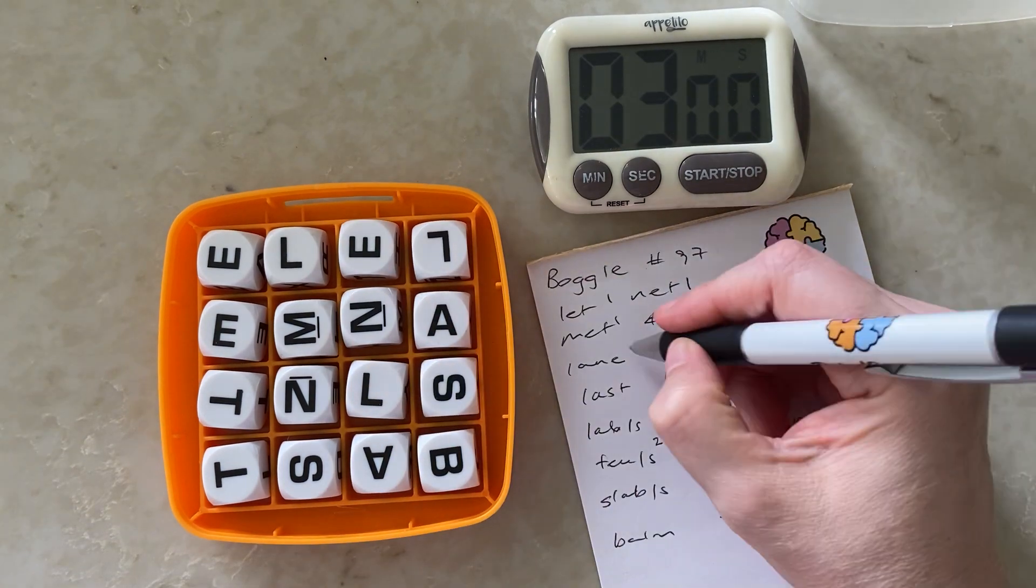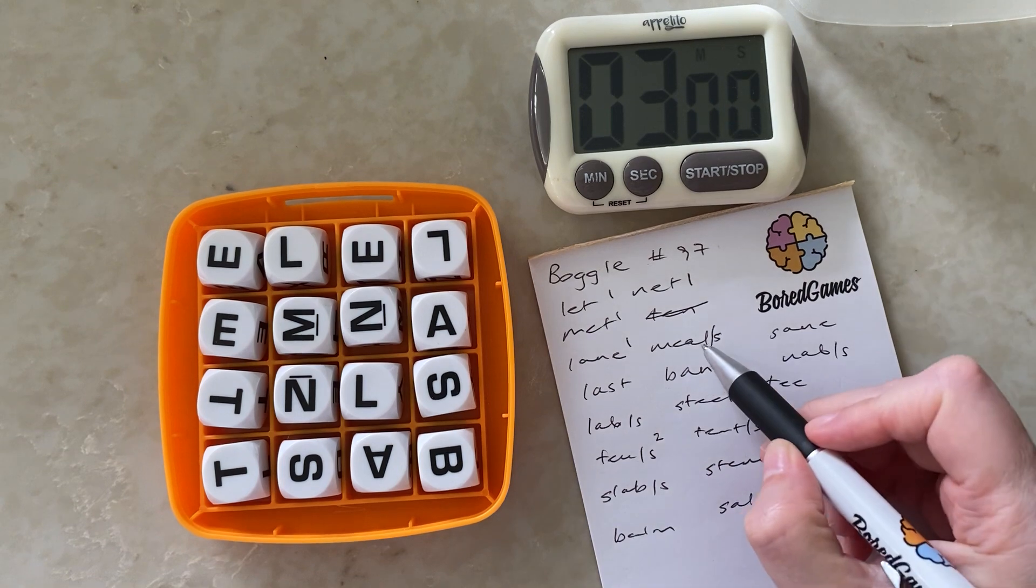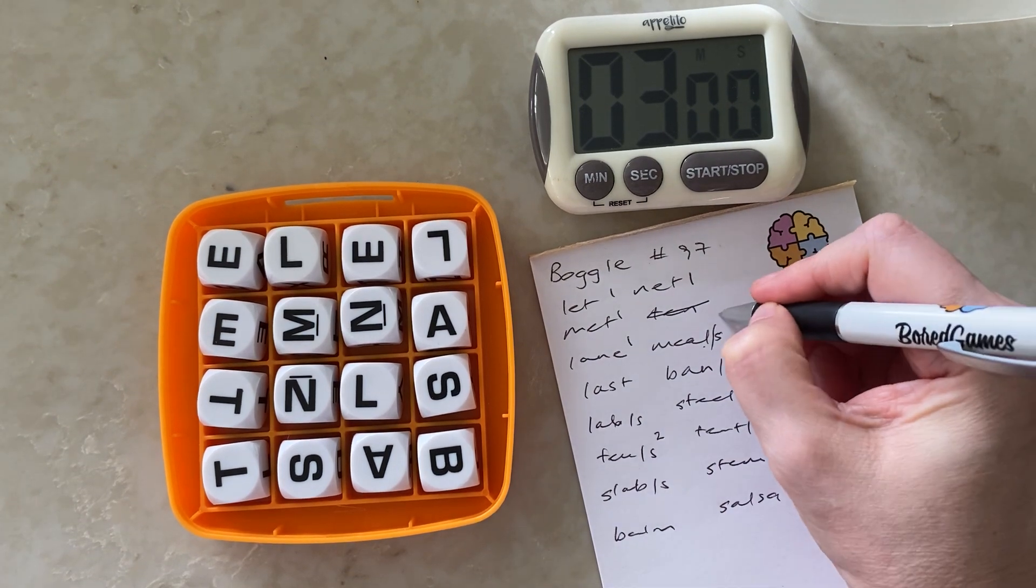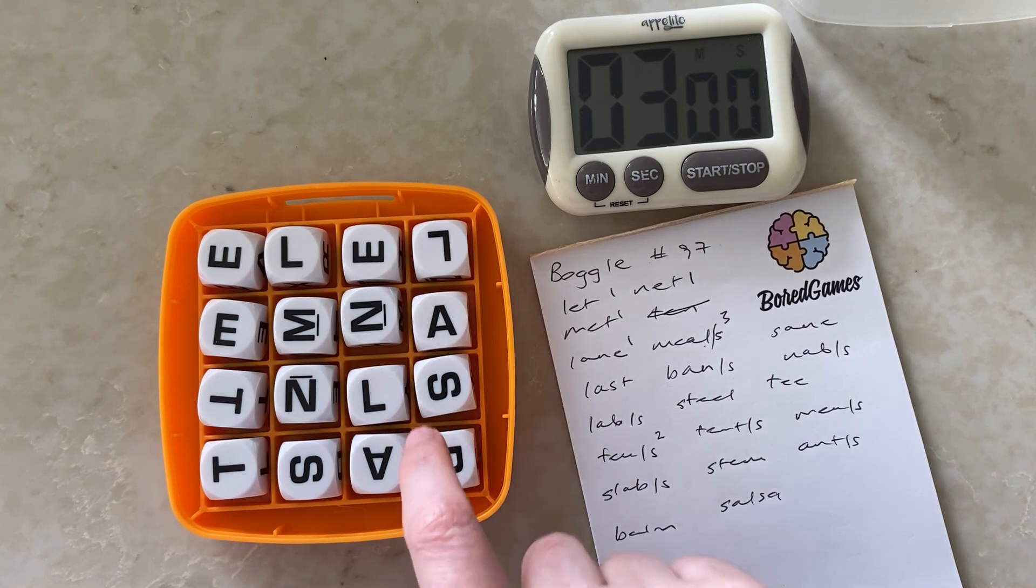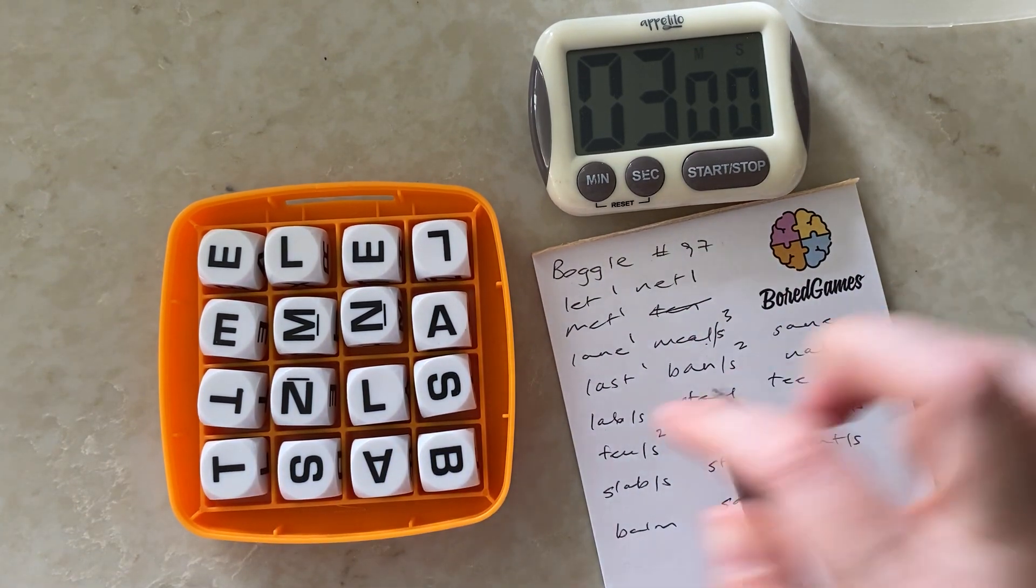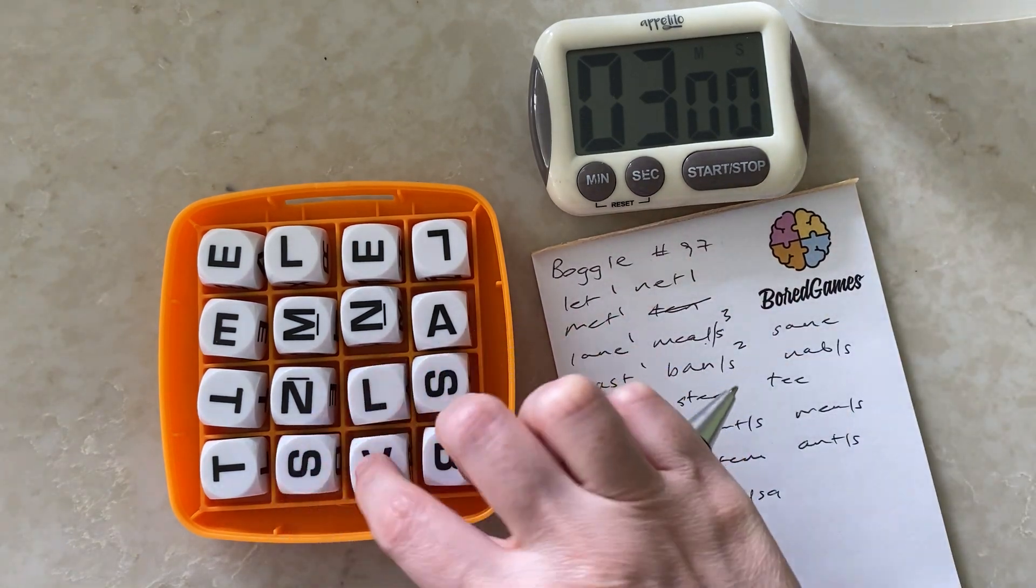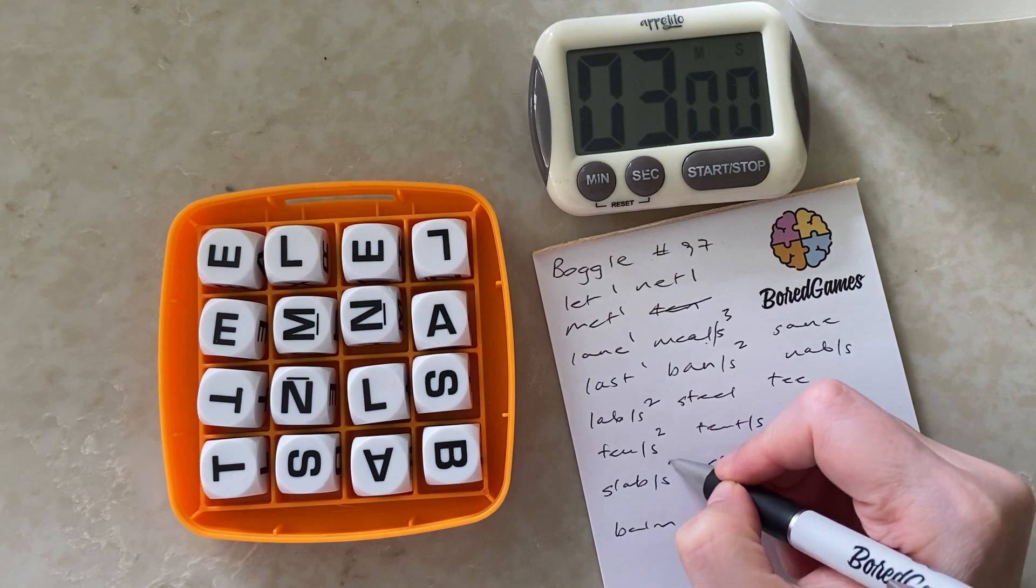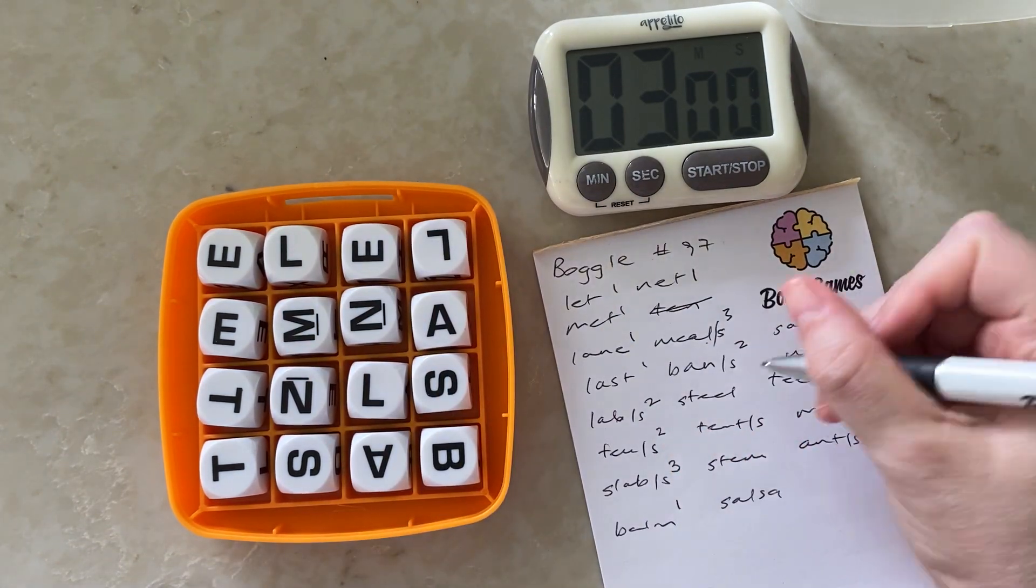Lane, meal and meals. So one point for the four letter, two points for the five. Last and ban and bans. Lab and labs. Slab and slabs. Balm. Steel.